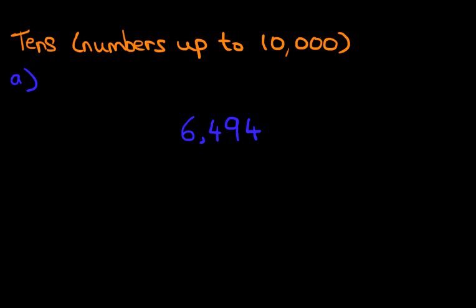Now on the right hand side we're going to work through what is 10 more than 6,494. So we know we're doing more than so we're counting forwards. Let's write this number again, 6,494. We're counting forwards and we're going to count forwards by 10.